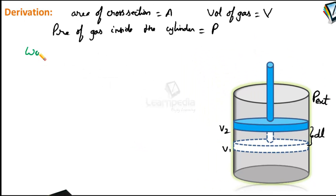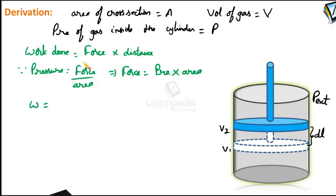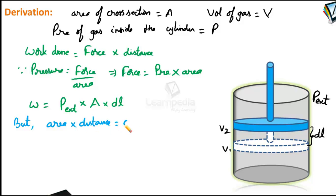We know that work done equals force multiplied by distance. Since pressure equals force per unit area, force equals pressure multiplied by area. Therefore, work done W equals force, which is P_external multiplied by area A, multiplied by the distance DL. Area multiplied by distance is nothing but equal to the change in volume of the gas during expansion.